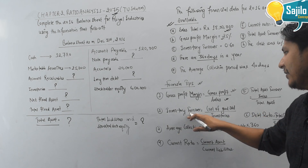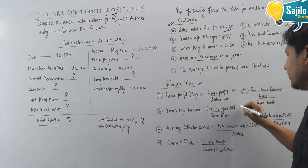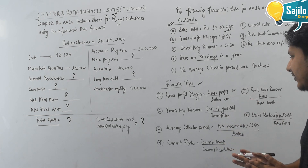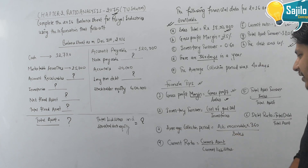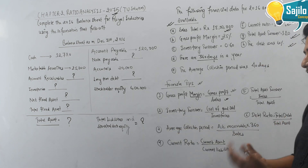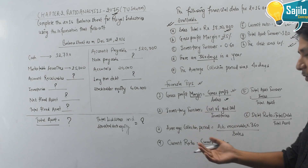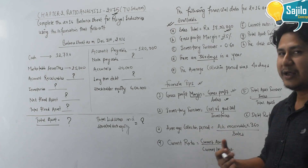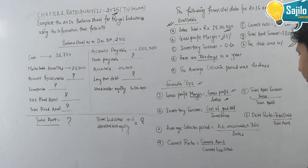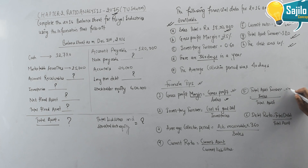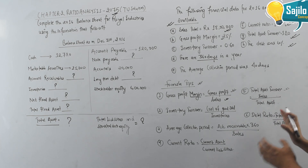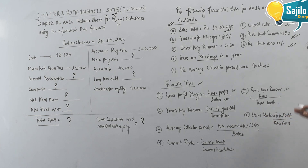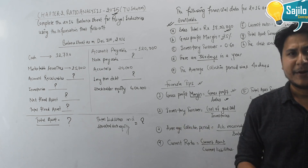Inventory turnover is cost of goods sold divided by inventory. Average collection period formula: accounts receivable multiplied by 360 divided by sales — this gives us DSO. Current ratio is current assets divided by current liabilities. Total assets turnover is sales divided by total assets. Debt ratio is total debt divided by total assets.